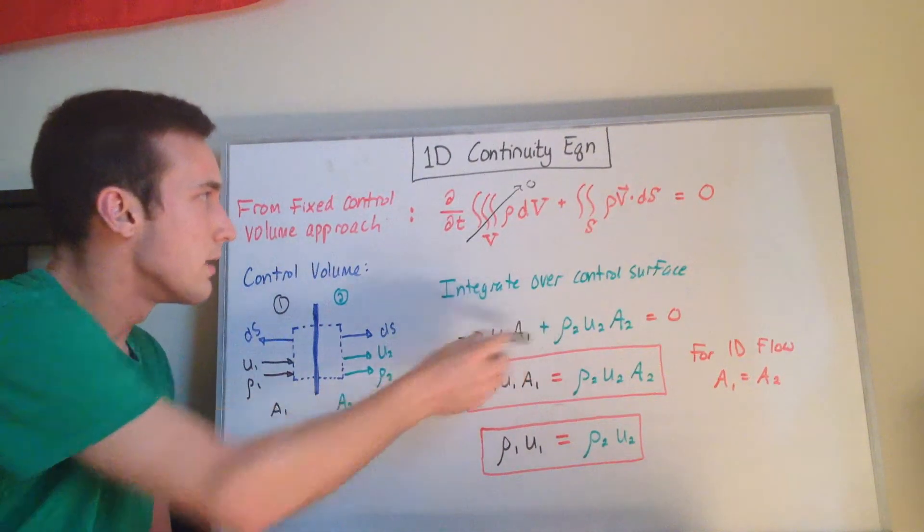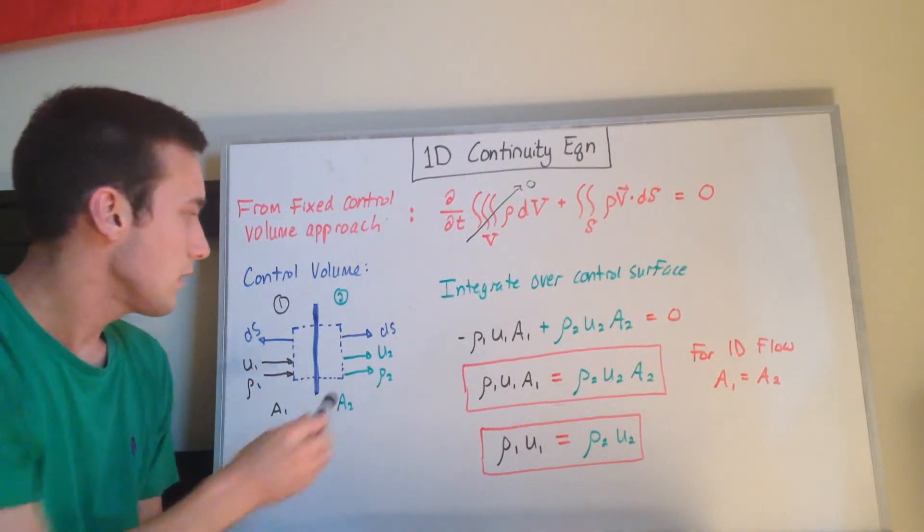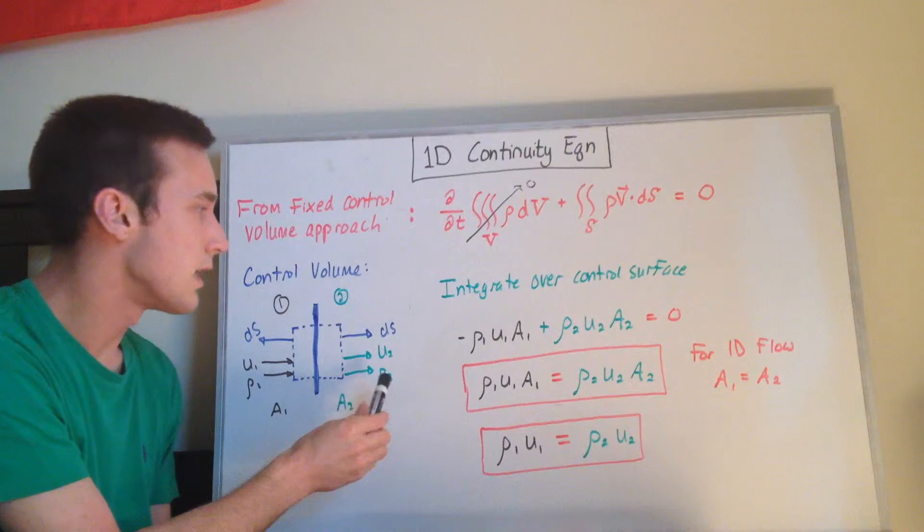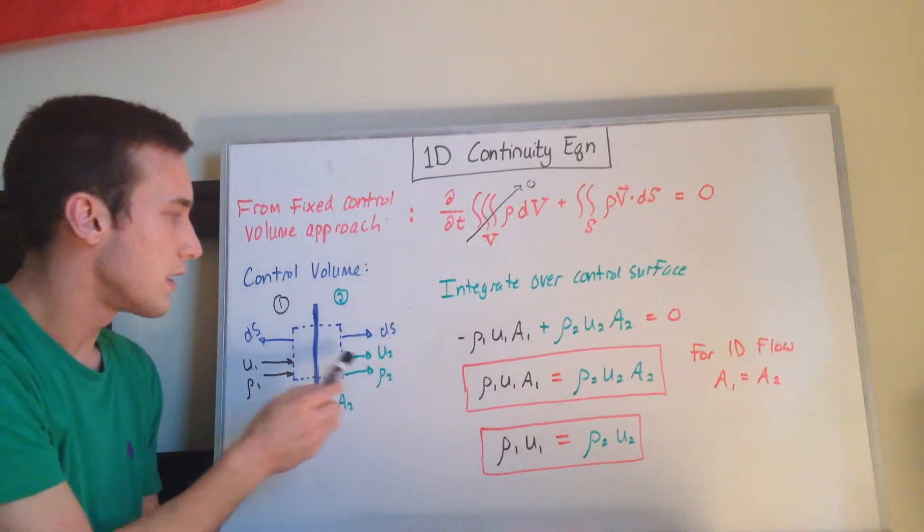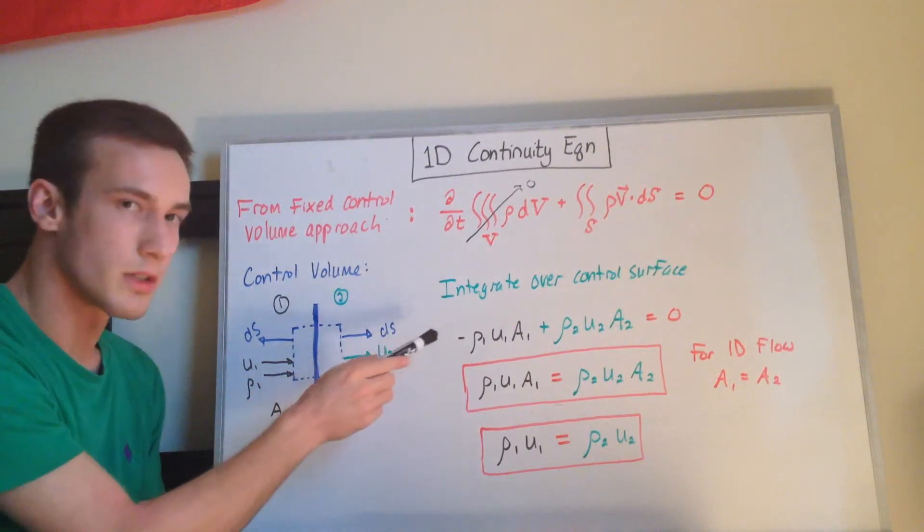And then on the other side, you have the density rho2 times u2a2, and the reason that that's a plus sign is because the ds and the u2 are in the same direction.